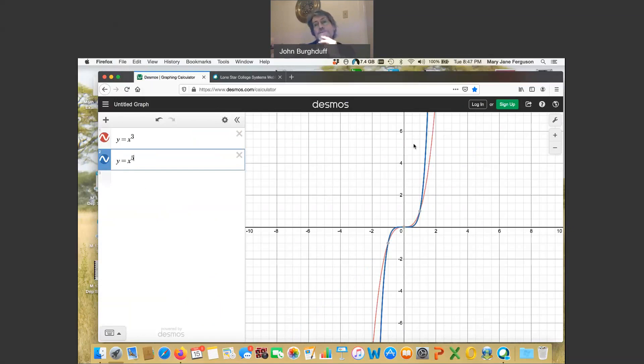And I want to notice that if you are out kind of on the periphery of these graphs, that y equal x to the fifth seems to be rising or falling more dramatically. If you think about that, that makes sense. For example, if x were equal to two in either one of these equations, in y equal x cubed, if x was two, y would be eight. But if x were two and y equal x to the fifth, y would be two to the fifth, that's 32. So the graph is going up much faster as the exponent gets larger.